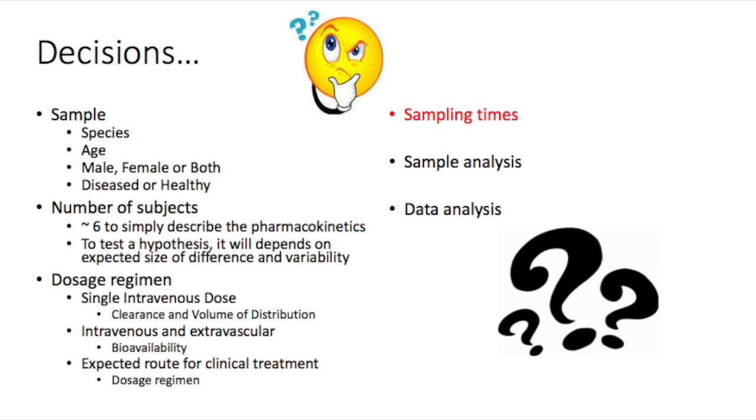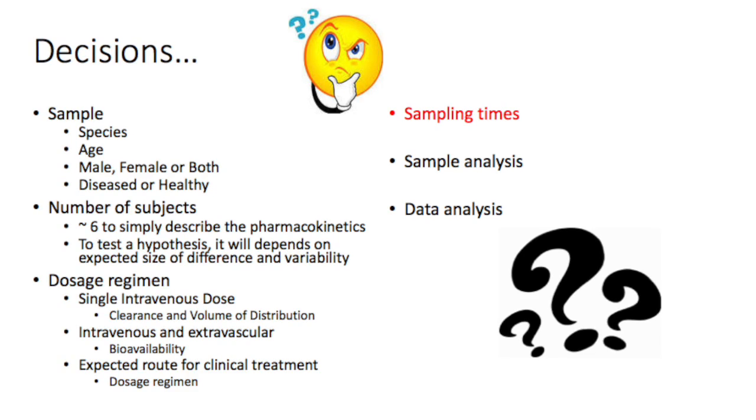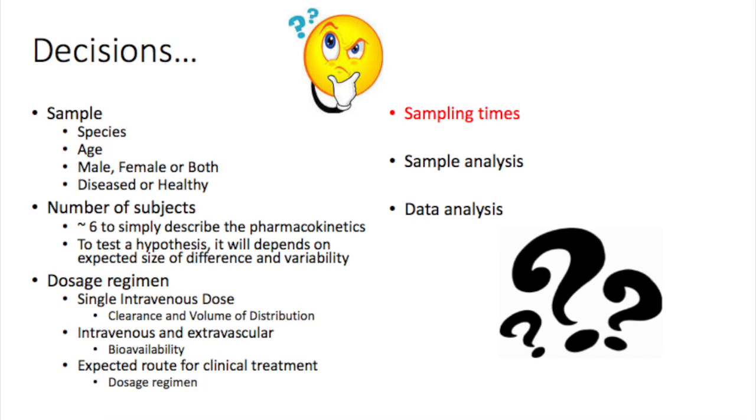On the other hand, you may want to specifically look at the effects of disease, age or breed on the pharmacokinetics, in which case you will want to choose your study population accordingly.